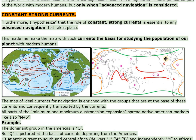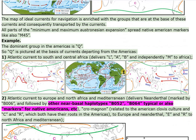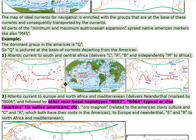All parts of the minimum and maximum Austronesian expansion spread Native American markers, like M45. The dominant group in the Americas is Q, so Q is pictured at the basis of currents departing from the Americas. Route 1: the Atlantic Current to South and Central Africa delivers haplogroups L, A, B, and independently M to Africa.